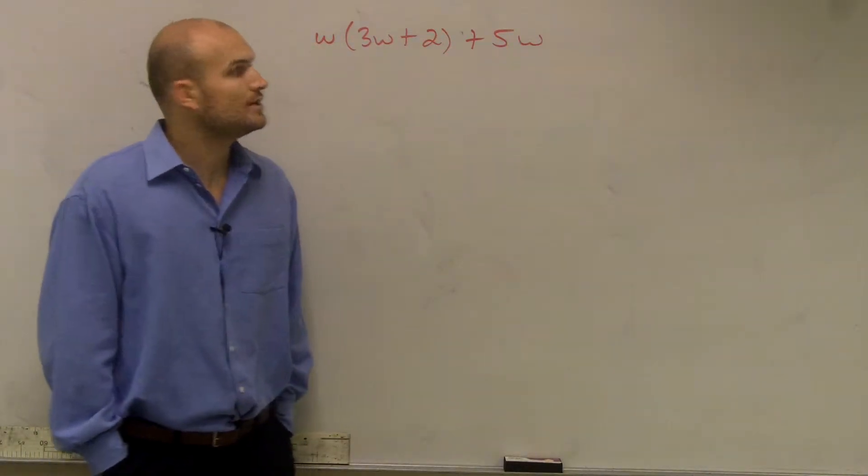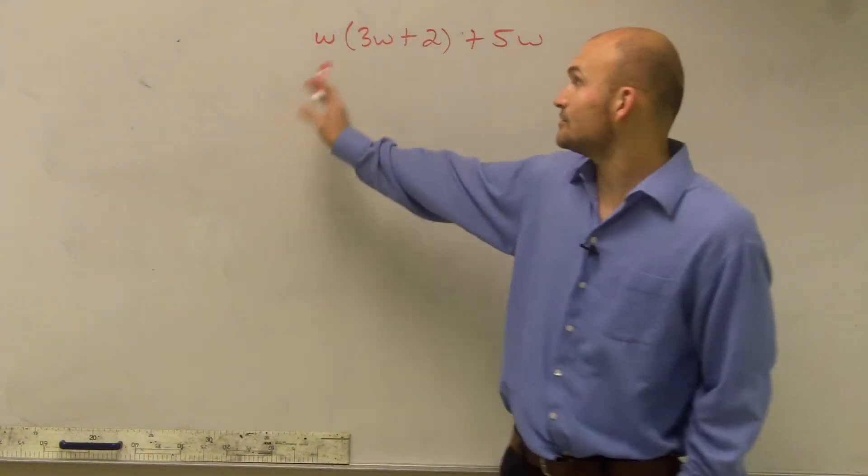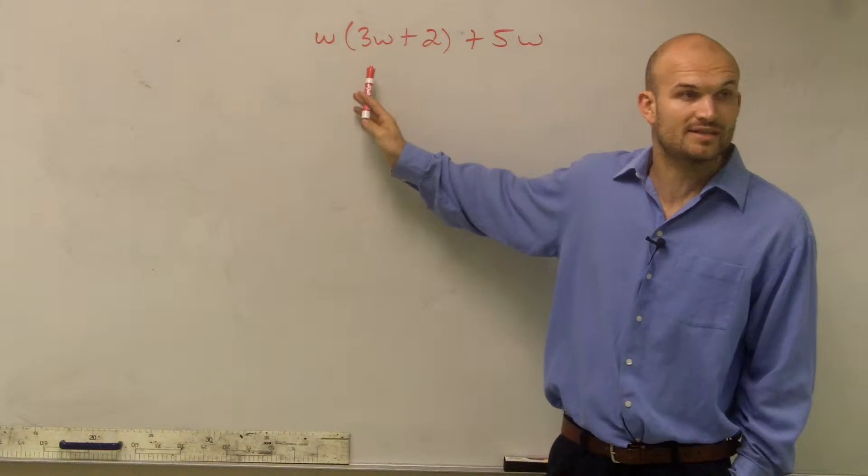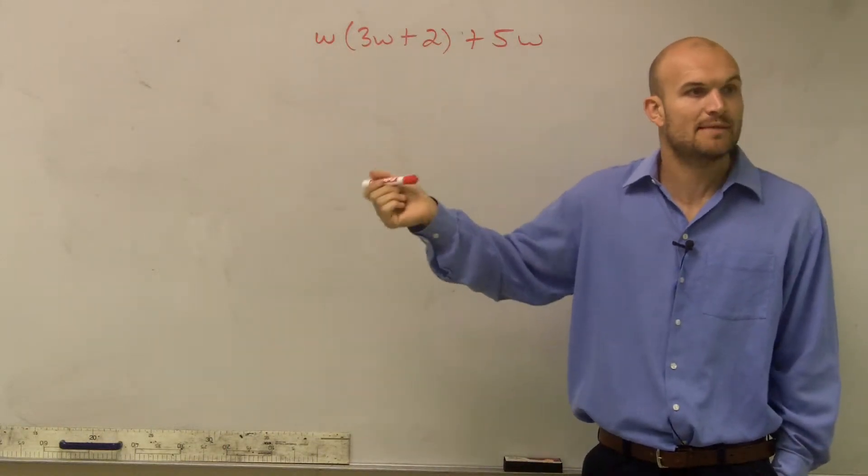So what I want to do here, Walter, is I need to first apply my distributive property, right? I can't do anything inside the parentheses to simplify this. I cannot combine 3w plus 2 because they're not like terms. They don't have the same base.